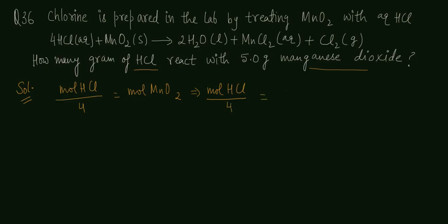Mol MnO2 equals given mass divided by molar mass. The molar mass, if you calculate this, turns out to be 87. Obviously MnO2's stoichiometric coefficient is 1, so we keep 1, which is redundant. Mol MnO2 is 5 by 87.